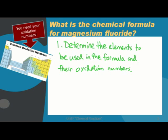We are looking at the chemical formula for magnesium fluoride. So we have the elements magnesium and fluoride. If you drop the IDE and put INE in, we have Mg for magnesium and F for fluorine. Next you go to find the oxidation numbers for those two elements.